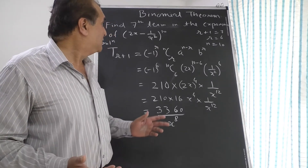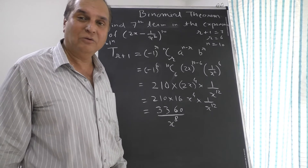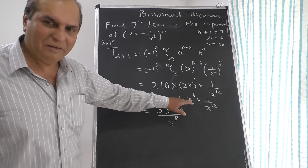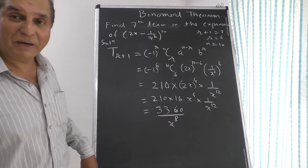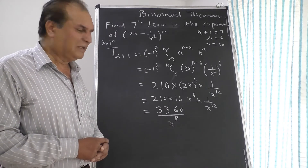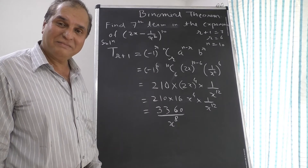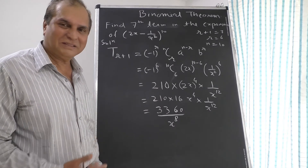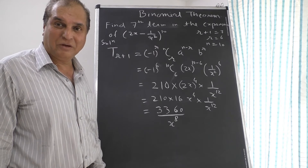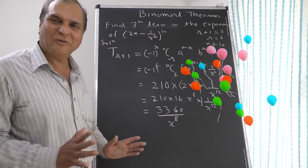They might also give a coefficient in the expansion as an unknown, like k, and ask you to find it. Use the same general term formula, equate the given coefficient, and by shifting terms you can find the unknown value. If you are not getting it, practice exam problems and you will get used to it. Any doubt you can ask me and I will solve it for you. Copy down the sum and keep practicing — that will improve your maths.